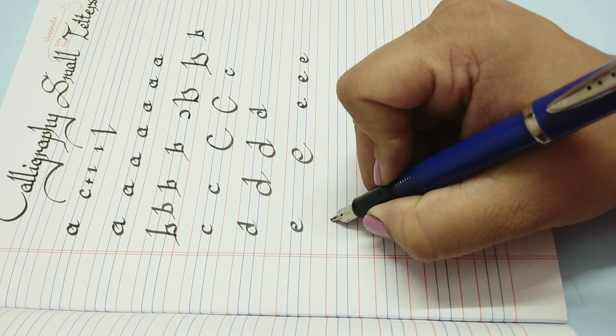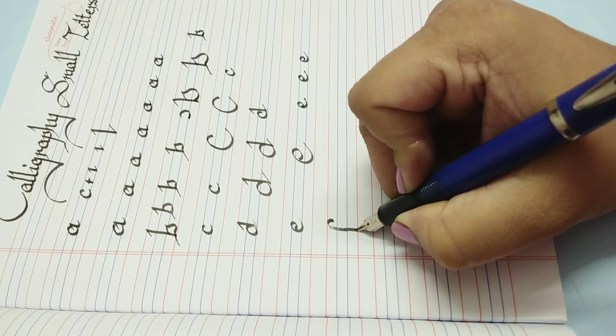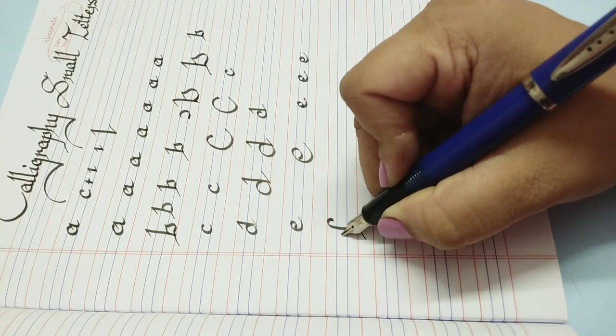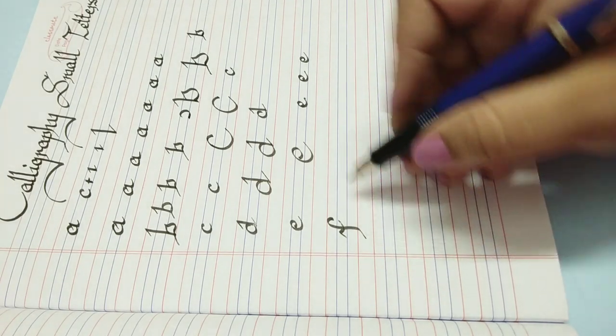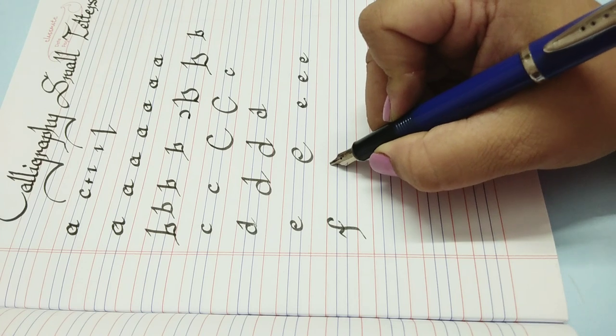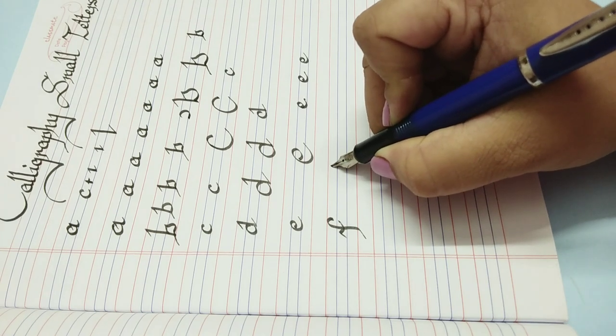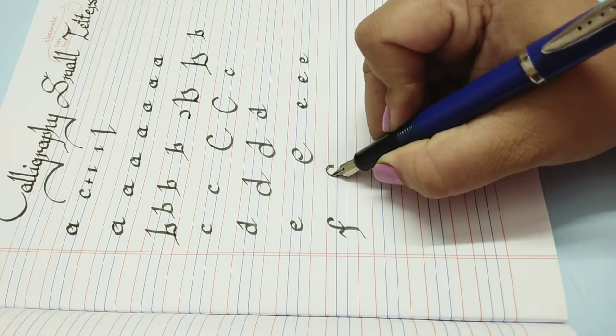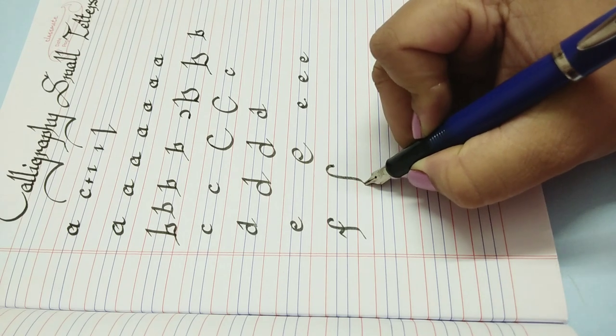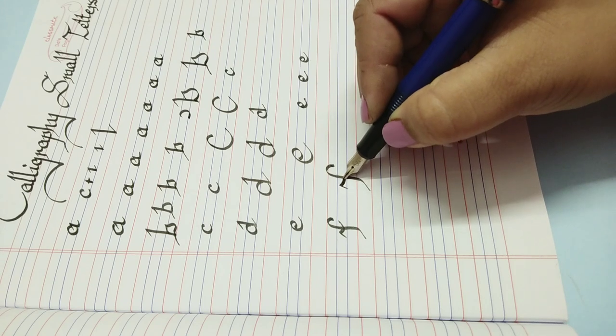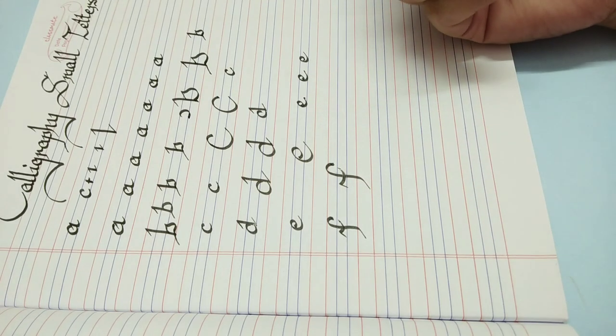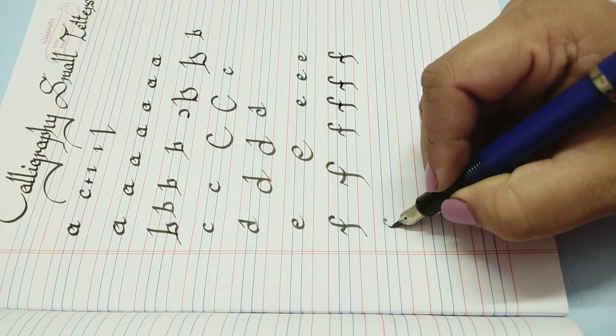F again starts with a flat nib, goes down, and then leaves a sharp end, and then this cross. If I draw it a little bigger, a flat F which starts from here, it goes this way, it leaves a sharp end and a sharp starting like this.